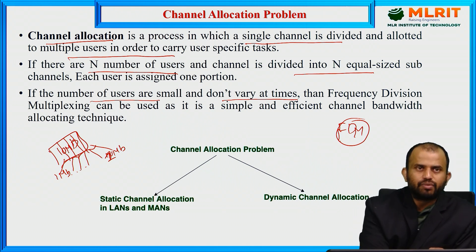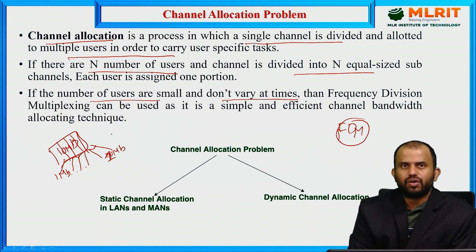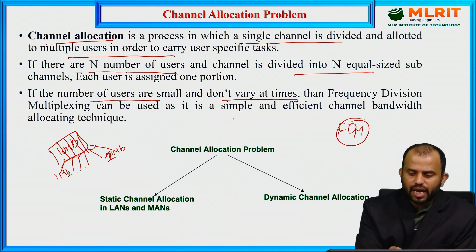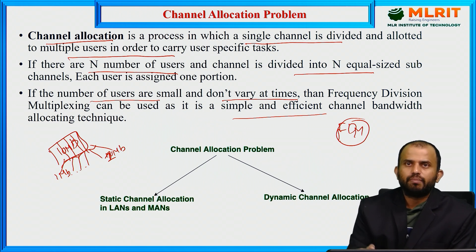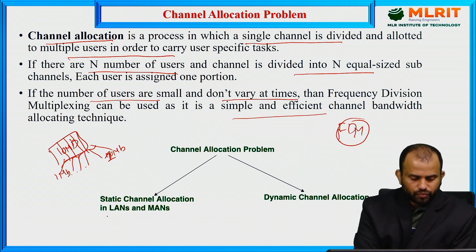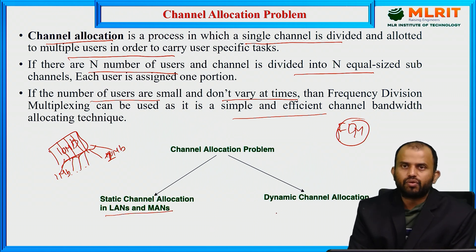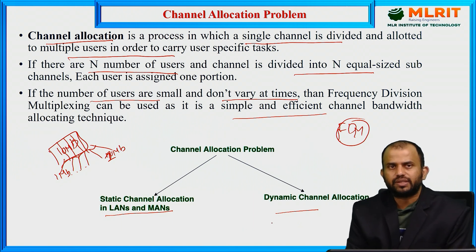In this situation, we use the FDM mechanism — Frequency Division Multiplexing. Based on the frequency structure we are using, we implement this FDM mechanism, which is a simple and efficient channel bandwidth allocation type. Based on the number of users increasing or decreasing, the time does not vary with the FDM mechanism. There are two allocation approaches: static channel allocation and dynamic channel allocation.